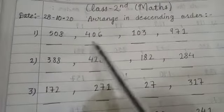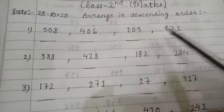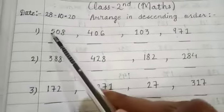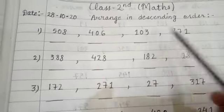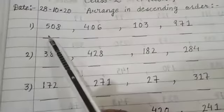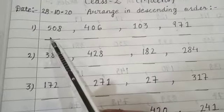Like in the first example, which is the biggest number? The first digit will be the biggest. The first digit is 5, 4, 1, and 9. So this number will be the biggest number, 971.